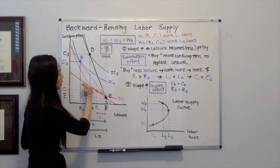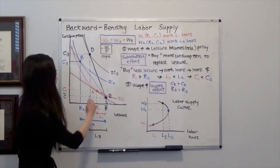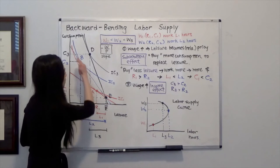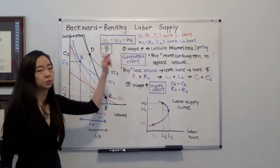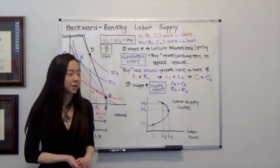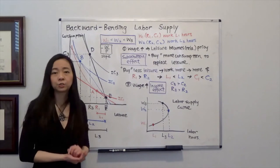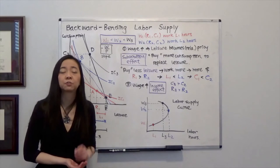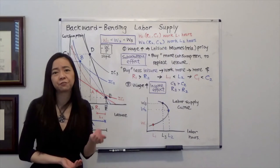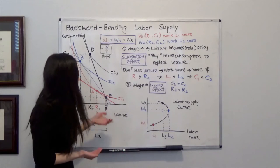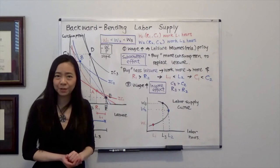Now, at this point, your substitution effect is going to kick in. So, when your wage level goes up, that means for each hour of leisure, you will have to give up more wage. Then that means the leisure becomes more expensive.